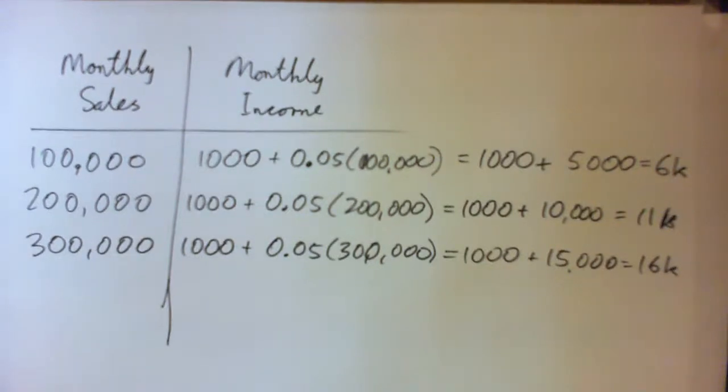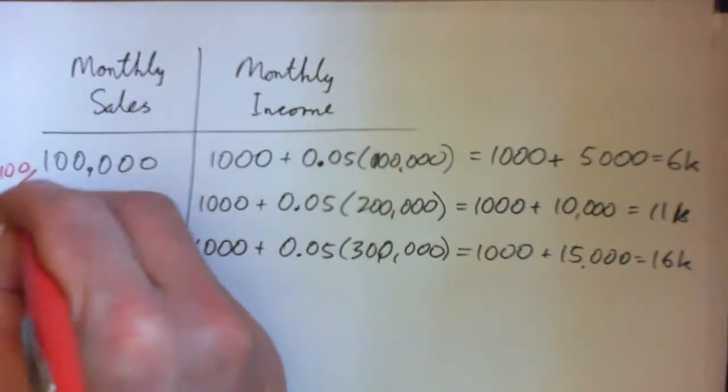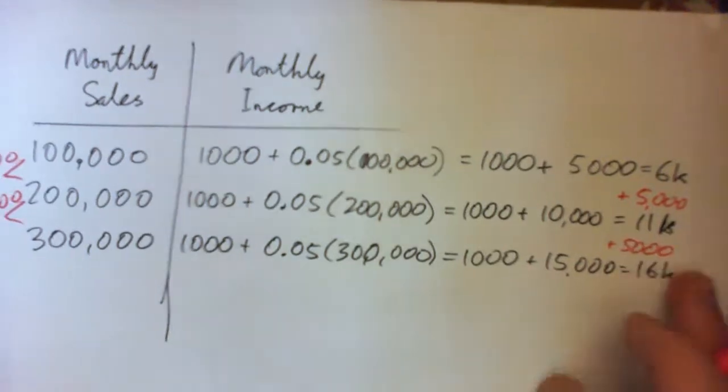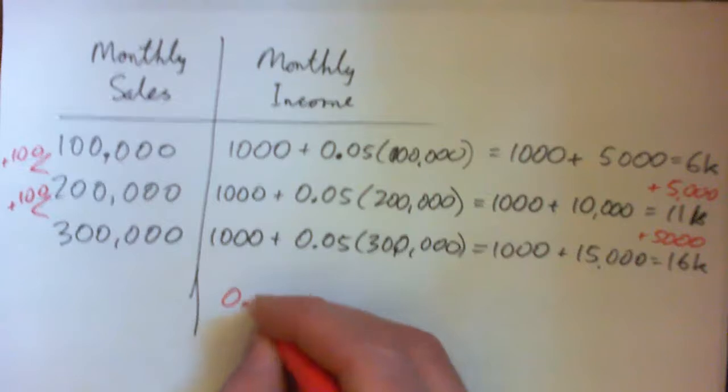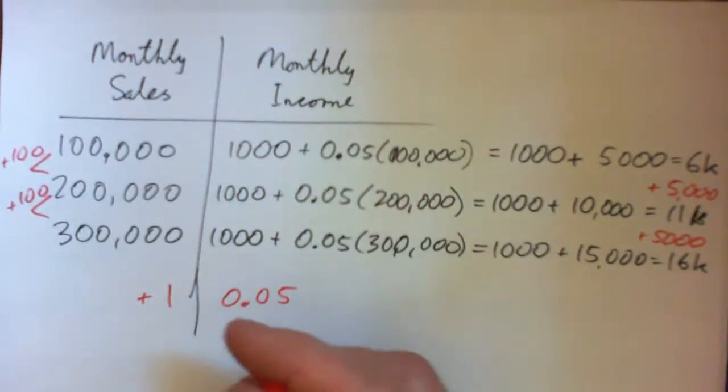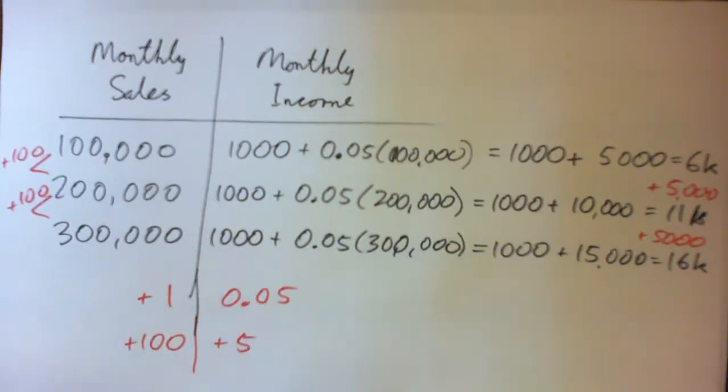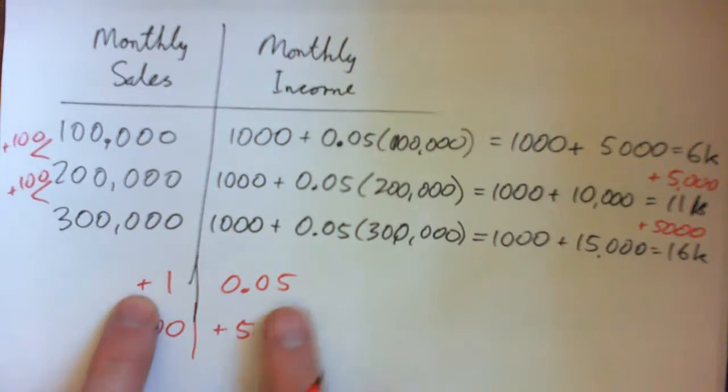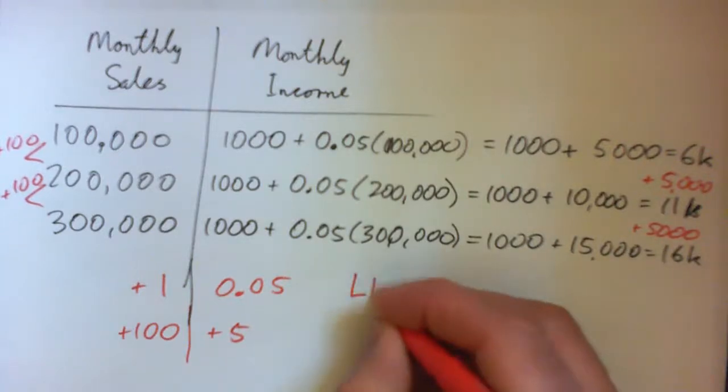So we can see that as the monthly sales goes up by the same amount, up by $100,000 each time, his salary goes up by $5,000 each time. So he gets an extra $5,000 for every extra $100,000 of sales. Or you might have figured out that he gets an extra 5 cents for every extra dollar, or that for every extra $100 he gets an extra $5. It's the same increase each time, so that is a linear function. This is linear.